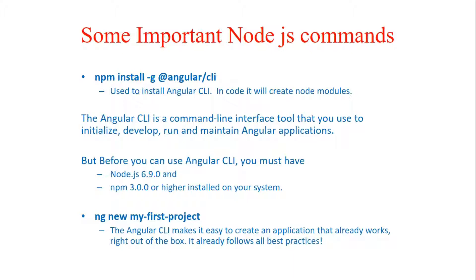This command is used to install Angular CLI, and on running it will create some node modules for you. Node modules are basically JavaScript libraries provided by Node.js that can help you in coding. Angular CLI is a command line tool that you use to develop, run, and maintain your Angular applications. Before you run this command, you must make sure you have at least Node.js version 6.9 or higher and npm 3.0.0 or higher installed on your system.